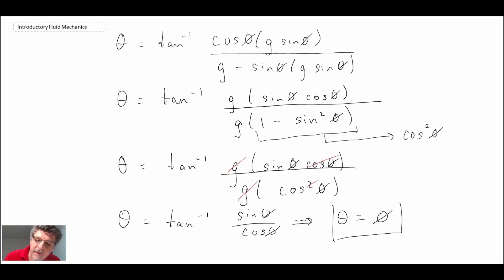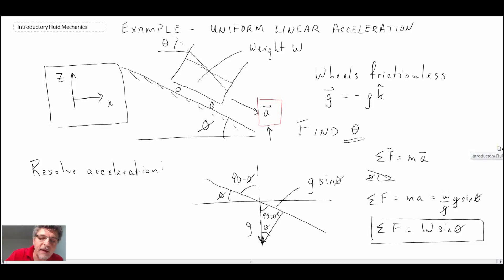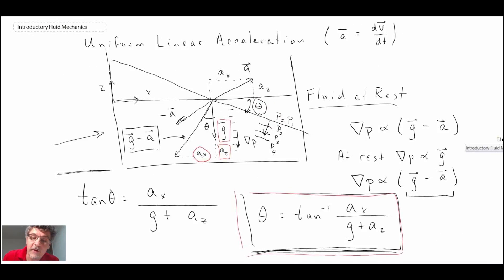This is kind of an odd result, but what that tells us is that the angle of the surface, if we go back to our original problem statement, if theta is equal to phi, that means that the angle of the fluid does not actually go up like we've drawn it, it actually just remains like this, so it remains parallel to the surface under uniform linear acceleration. That's what we get from applying the equation for the free surface to an accelerating cart that is going down an incline. That's an example of applying the uniform linear acceleration equation to determine the shape of a free surface.